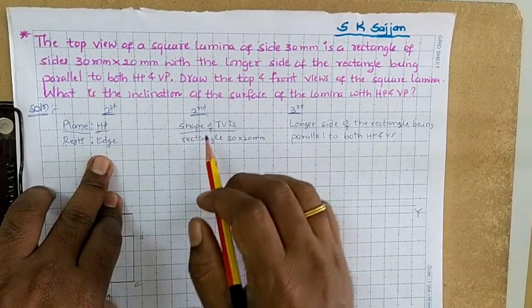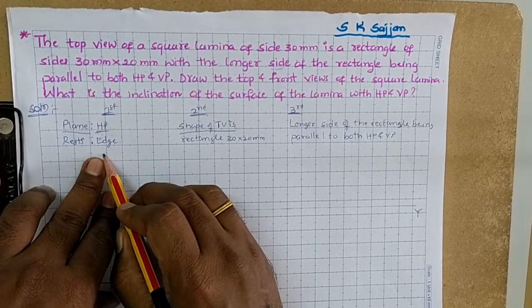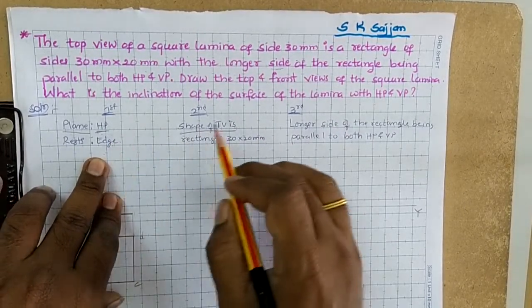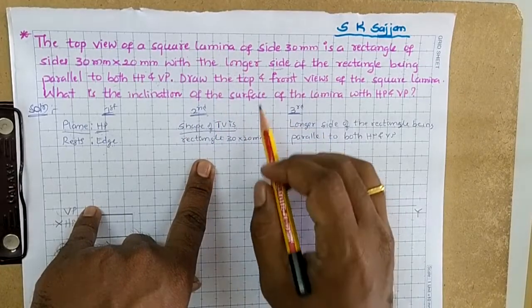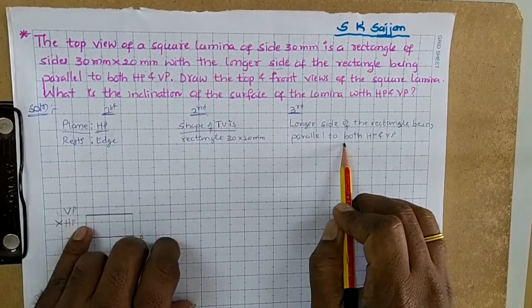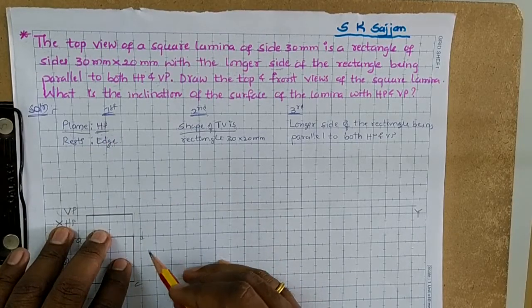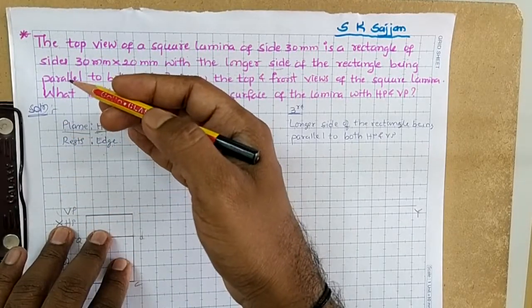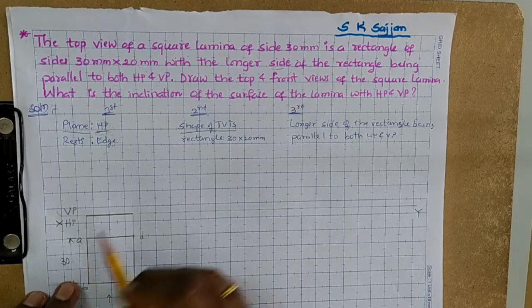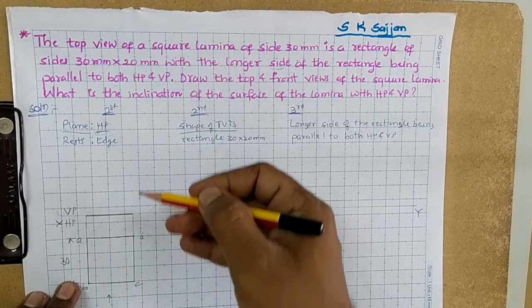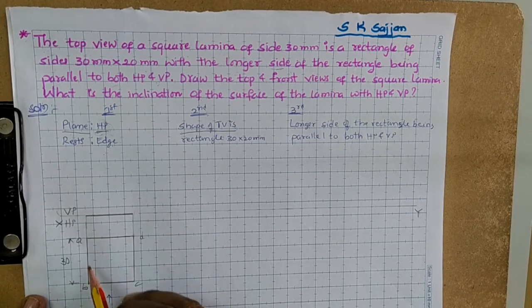Now, how do you know if it is resting on edge or corner? The longer side of the rectangle being parallel — 'side' means resting on edge or side. These are the details given for the first portion. Since it is on HP, we draw the top view first. Draw the top view as a square resting on side AB below the X-Y line. Construct a square of length 30 mm.